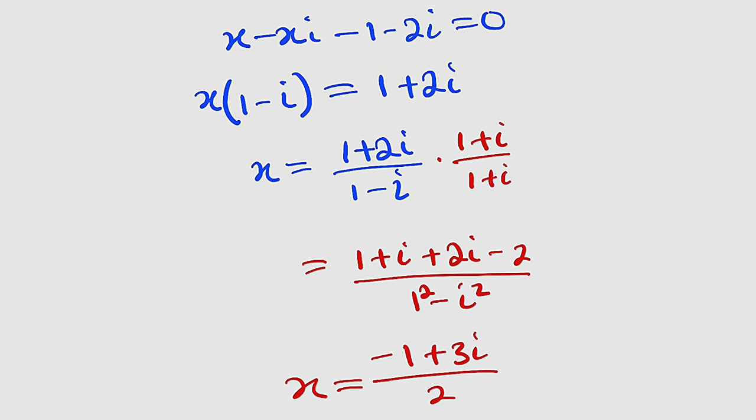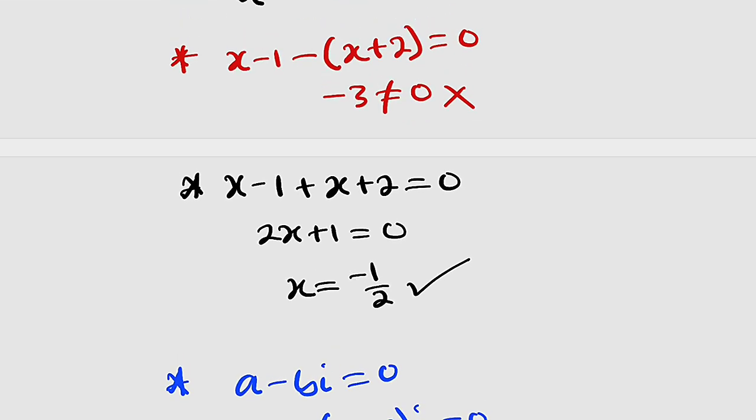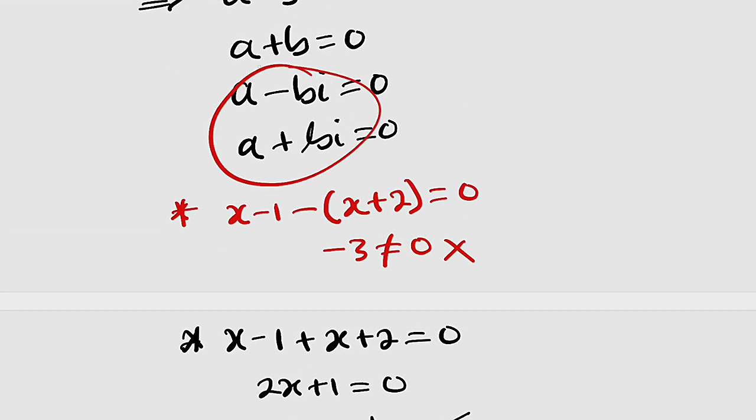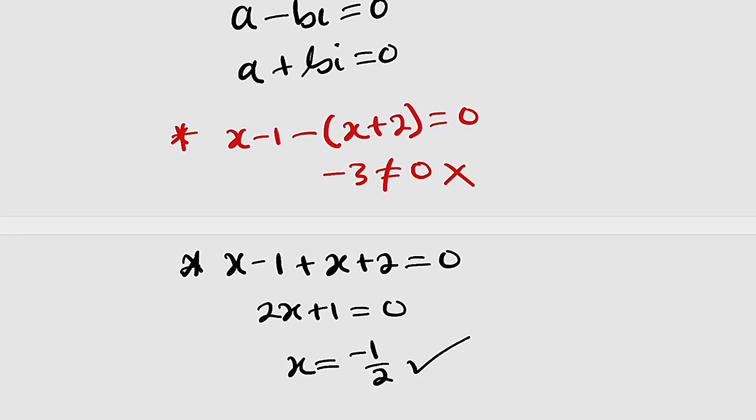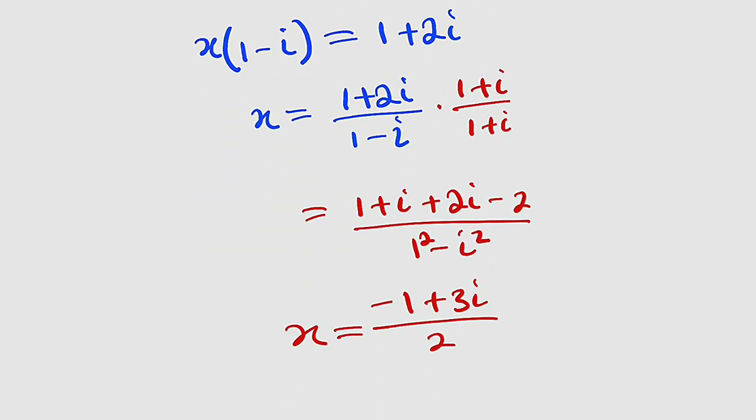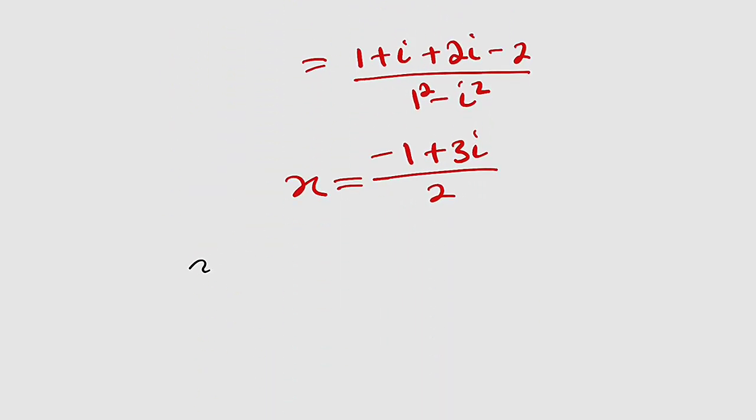But one thing you should know is that the two equations are conjugate of each other. Therefore, their solutions will be conjugate of each other as well. So even the second problem where we have a plus bi, the solution, if you substitute, x will be equal to minus 1. Instead of this plus, you have minus 3i divided by 2.